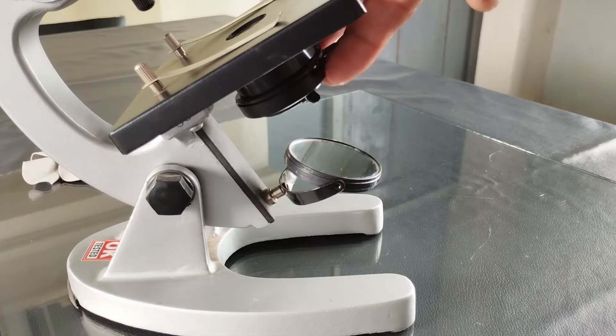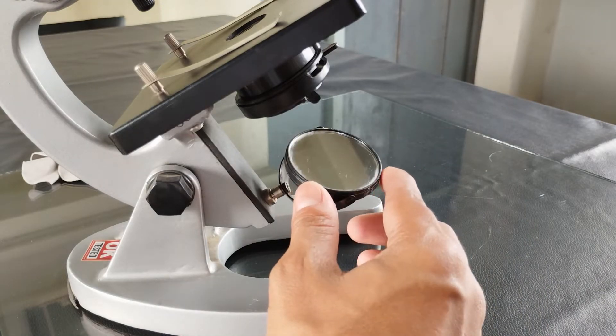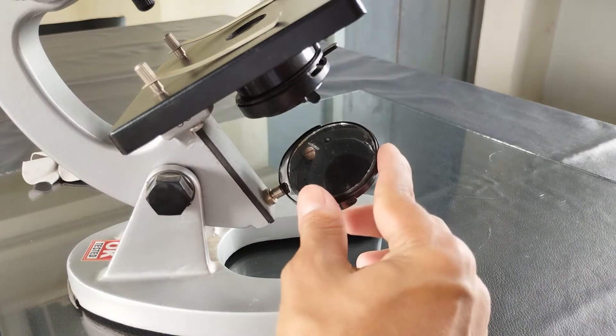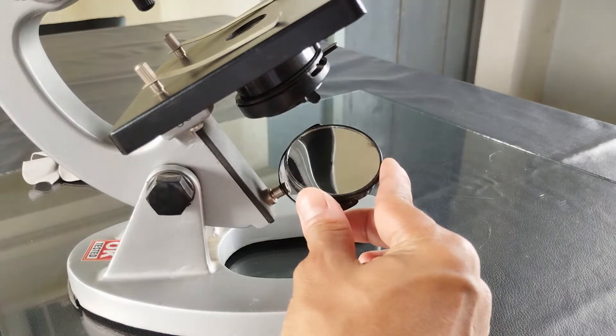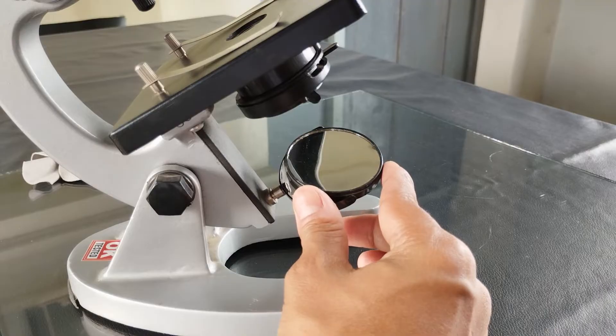If the microscope has an inbuilt condenser, then use the plain side of the mirror for natural daylight and the concave side for artificial light source. If the microscope doesn't have a condenser apparatus, then always use the concave surface of the mirror to reflect light.